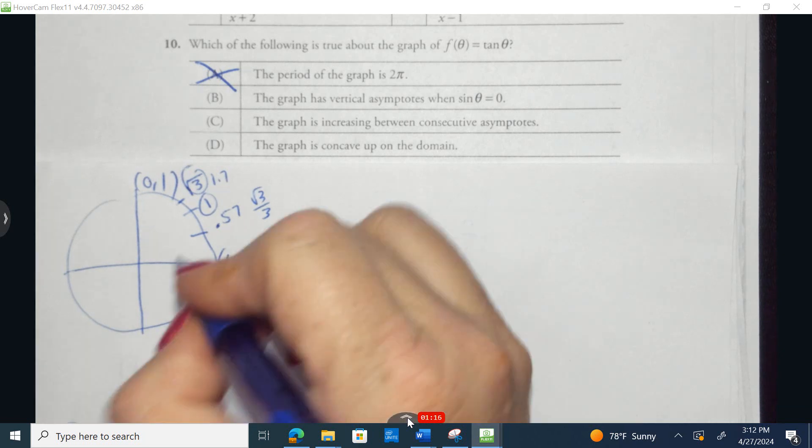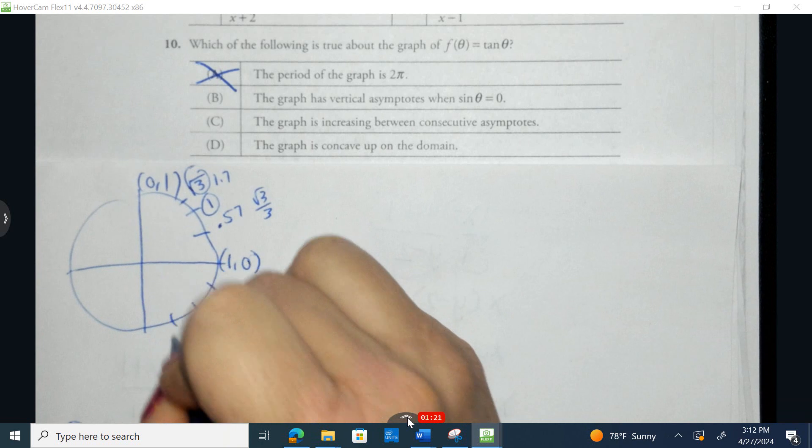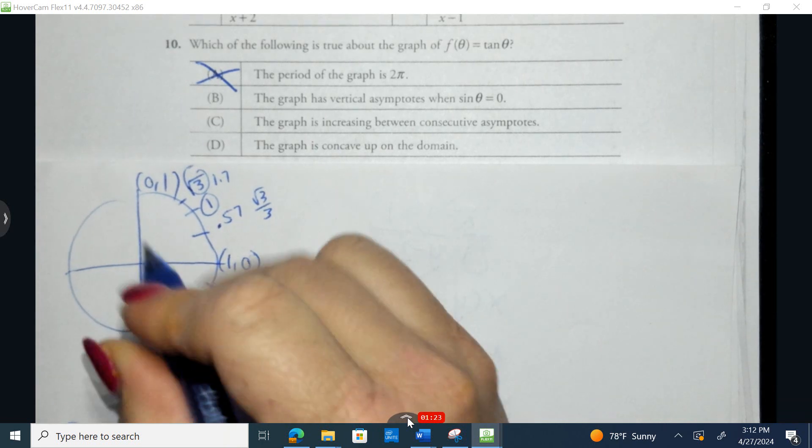And the same thing would be down here in quadrant four. This is going to be a negative 0.57, this is going to be a negative 1, and this is going to be a negative 1.7.